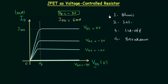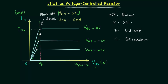In this presentation we only focus on the ohmic region, because we will use the JFET as a voltage controlled resistor. The ohmic region is to the left of the pinch-off locus. The pinch-off locus is formed by joining the different pinch-off points. This region is also called the voltage controlled resistance region.